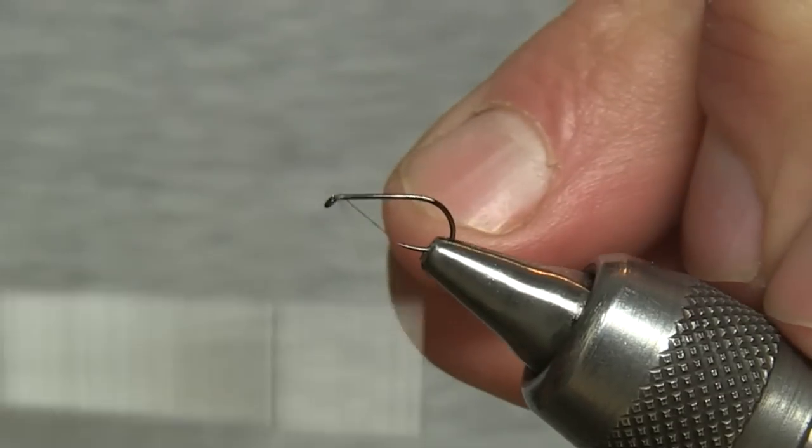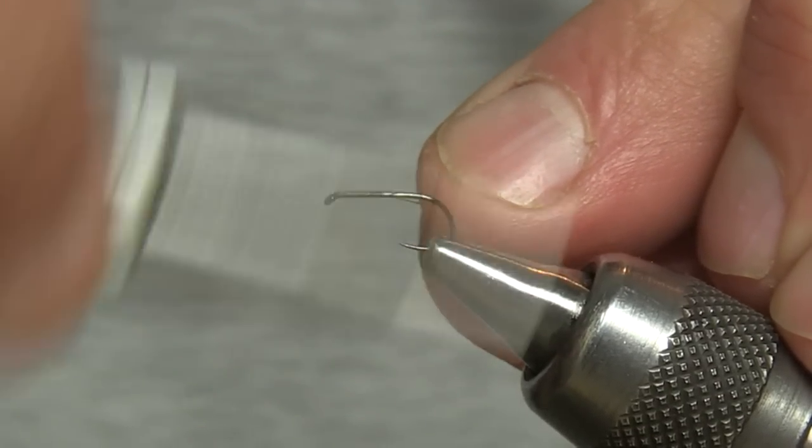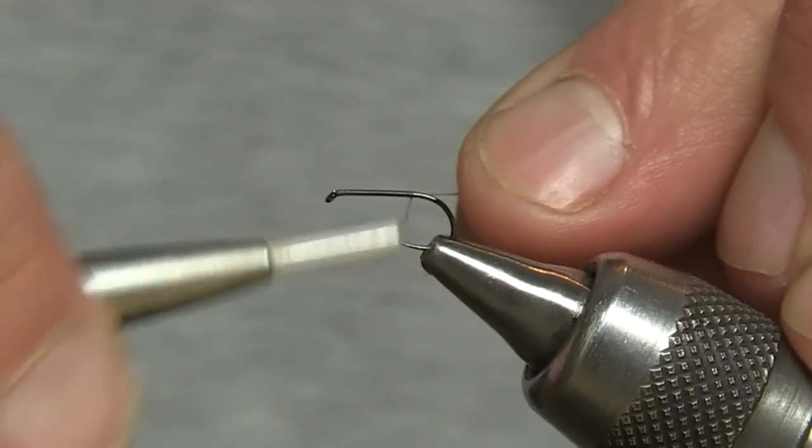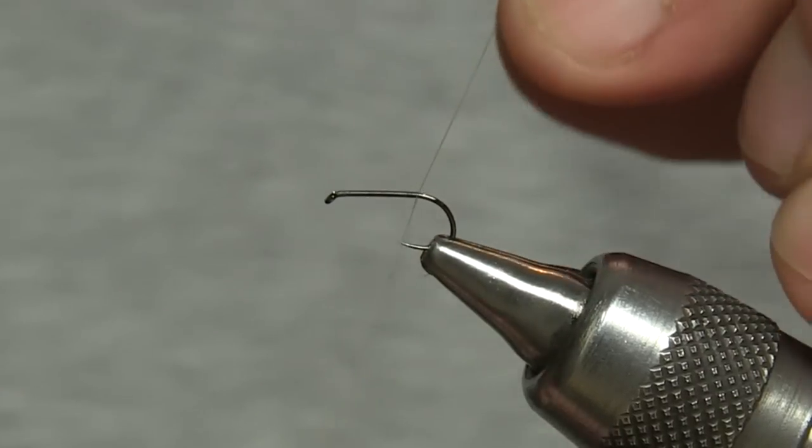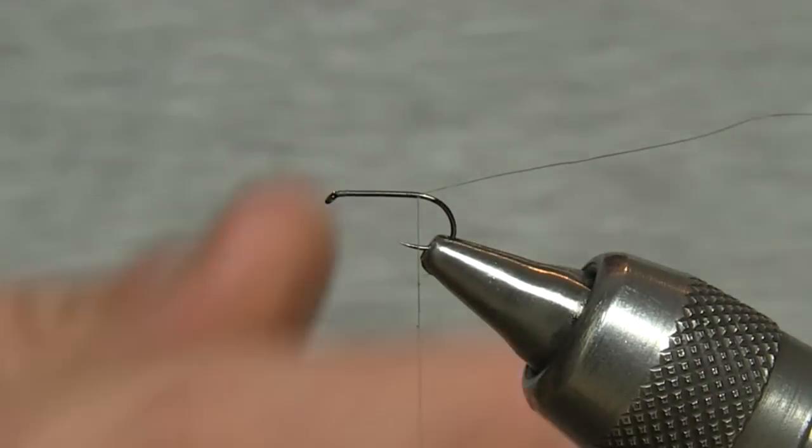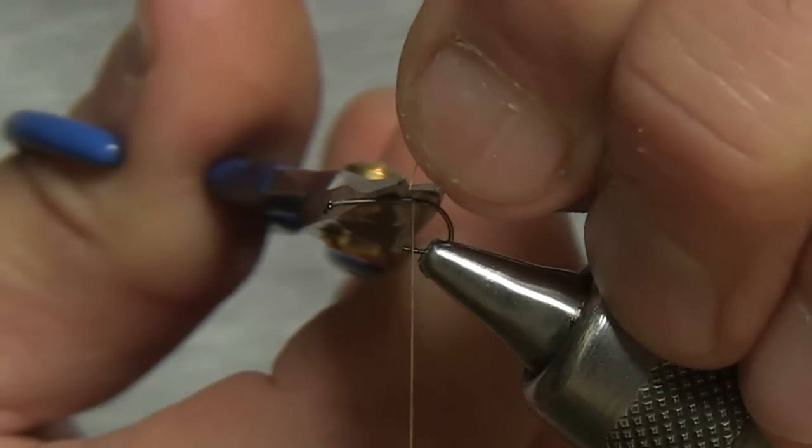Start by laying on a bed of tying silk just to where the hook begins to bend.